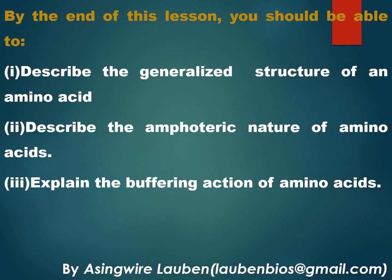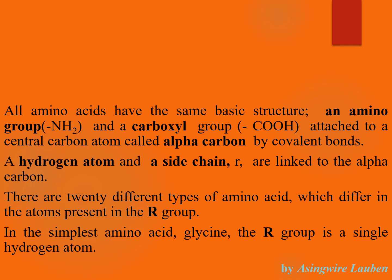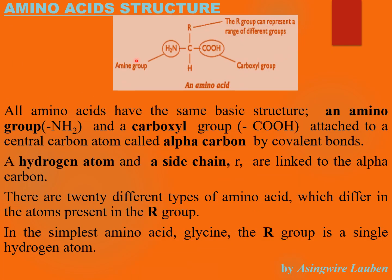Here is the structure of an amino acid. On this structure you can see that the amino acid has got an amino group, which is NH2. This amino group is attached on a central carbon atom, known as the alpha carbon.